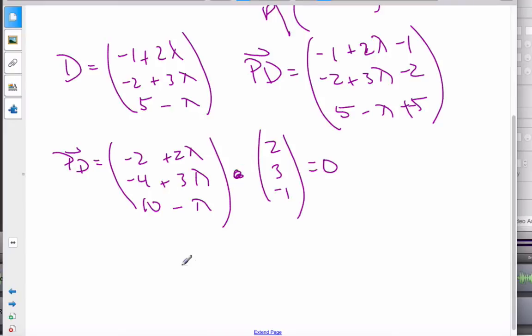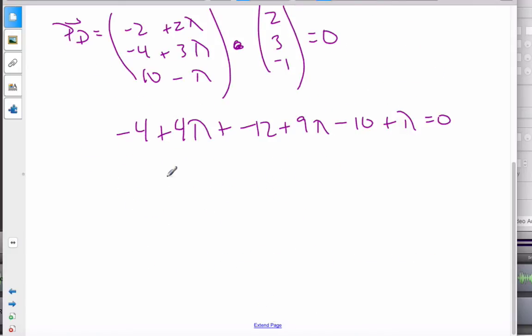When I multiply these and do the dot product or scalar product, I get -4 + 4λ + (-12 + 9λ) + (-10 + λ) = 0. The 4, the 9, and the 1 makes 14λ. The -4, -12, -10 gives me -26 equals zero. So lambda equals 26/14, which is 13/7.